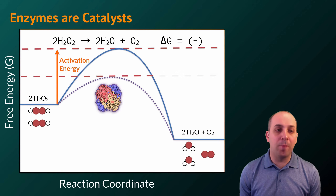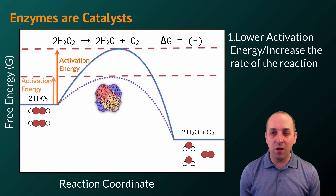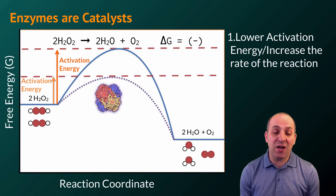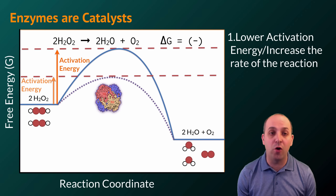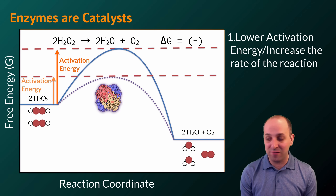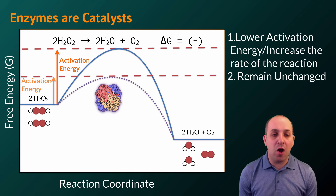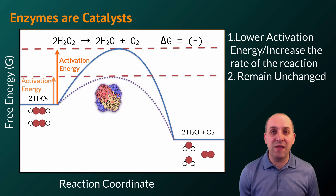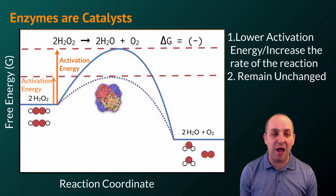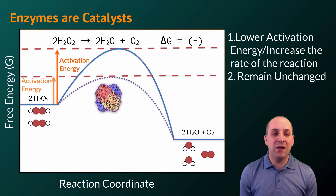Enzymes and all catalysts work by lowering the activation energy. This increases the rate of the reaction and makes reactions more likely to occur. When catalase is present, it's much more likely that hydrogen peroxide molecules will be converted to water and oxygen than in the absence of catalase. Importantly, catalysts remain unchanged. If enzymes were changed as a function of catalyzing their reactions, cells would have to continuously produce new versions of those enzymes. Enzymes can be reused to catalyze reactions over and over again.